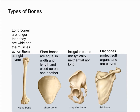Flat bones also provide a broad surface for muscle attachment. Some other examples of flat bones are your sternum, your ribs, your scapula, as well as the cranium bones.